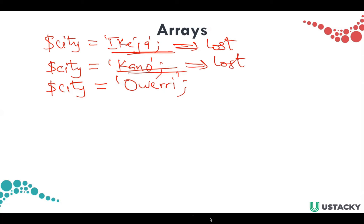A way to solve this problem is using different variables for each city. For example, we can write it as $city1 equals 'Ikeja', $city2 equals 'Kano', and $city3 equals 'Owerri'.